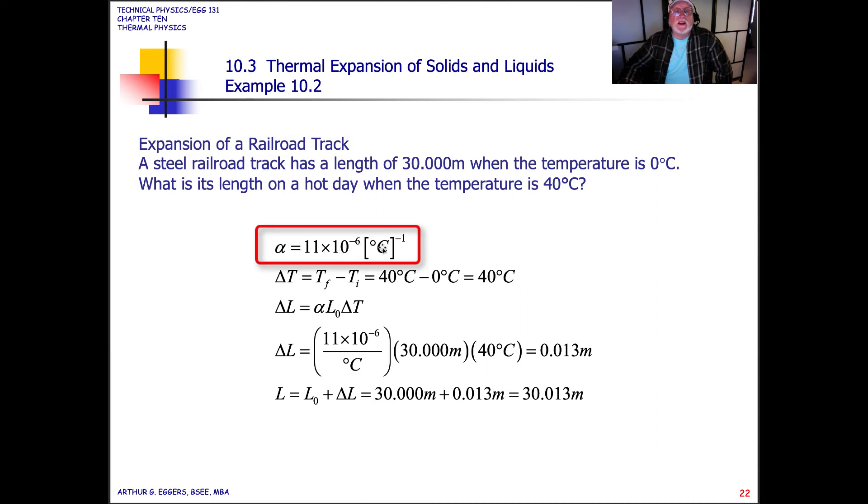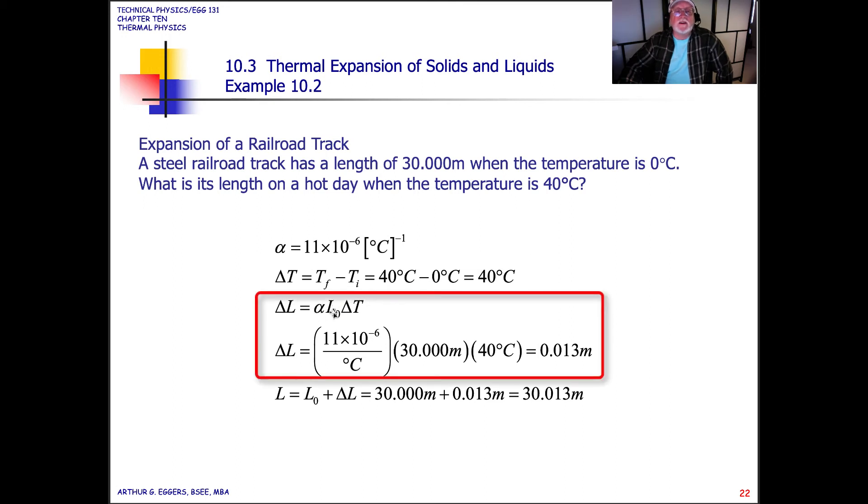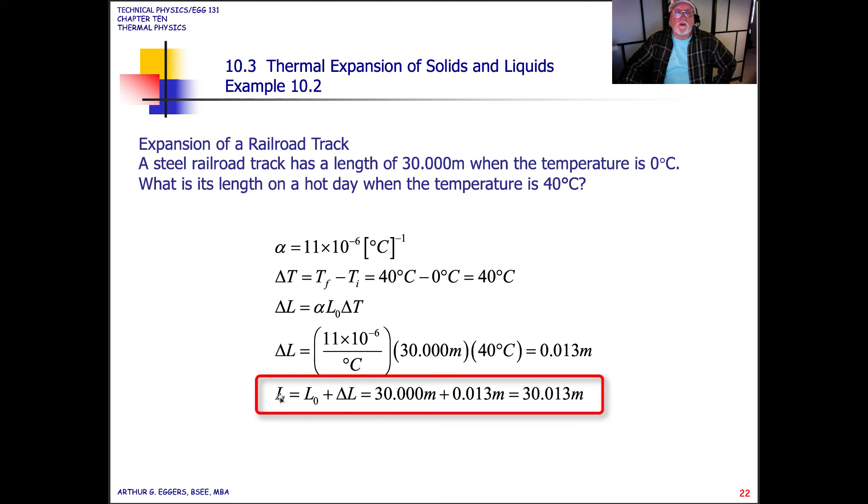So for steel, alpha is equal to 11 times 10 to the minus 6 per degree Celsius. The change in temperature from before and after, 40 degrees minus zero degrees, is a 40 degree change. The change in length is equal to alpha times initial length times the change in temperature. So we have 11 times 10 to the minus 6 per degree Celsius times 30 meters times 40 degrees Celsius. This is our initial, this is our change. This gives us 0.013 meters. So the change, overall, the initial plus the change, 30 plus 0.013 gives us 30.013 meters for the expansion that occurred on a hot day.